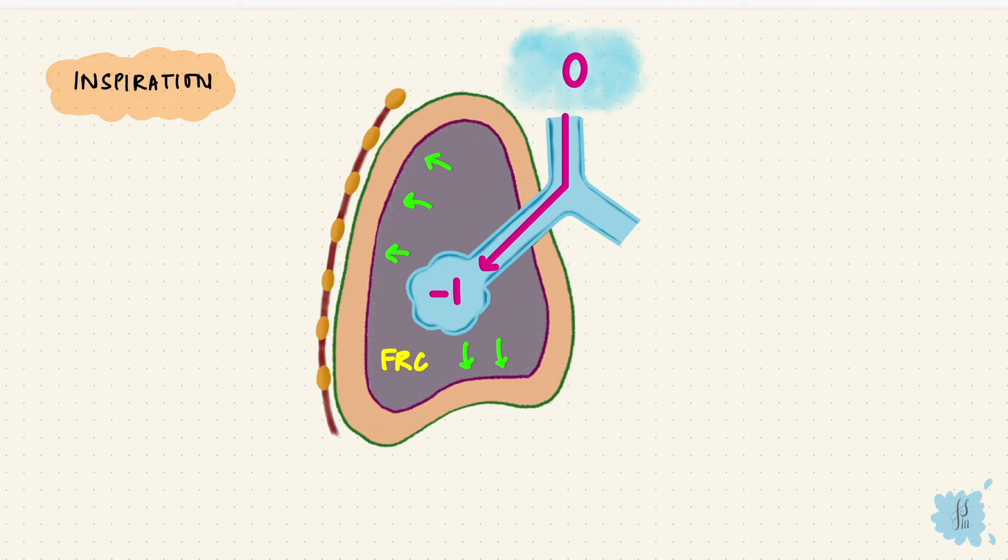The fact that the chest wall is expanding, that makes the pleural pressure more negative. So it goes down from its minus 5 to minus 7.5 cm of water.